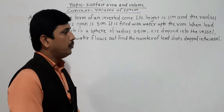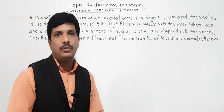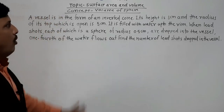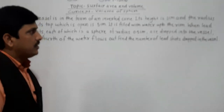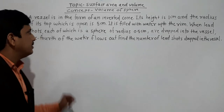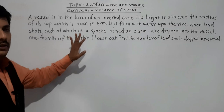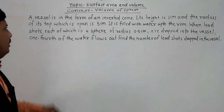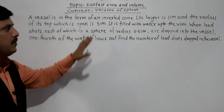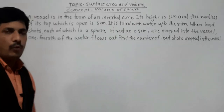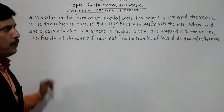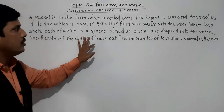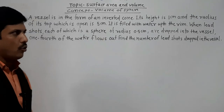Hello students, today we are going to solve some problems based on the concept of volume of sphere. A vessel is in the form of an inverted cone. Its height is 8 cm and the radius of its top, which is open, is 5 cm. It is filled with water up to the rim. When lead shots, each of which is a sphere of radius 0.5 cm, are dropped into the vessel, one fourth of the water flows out. Find the number of lead shots dropped in the vessel.